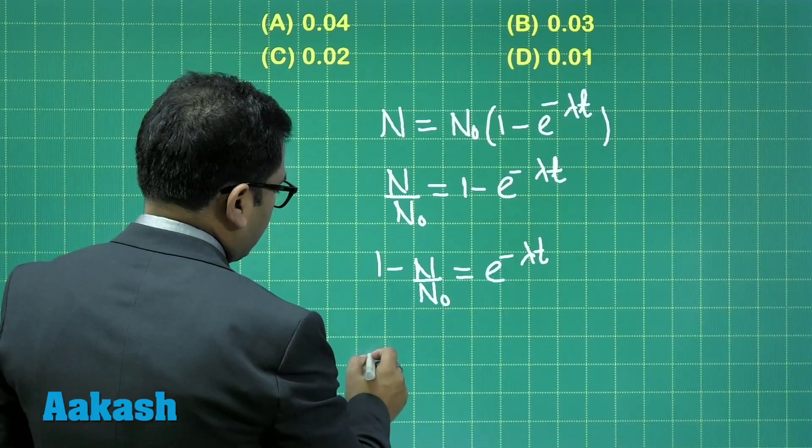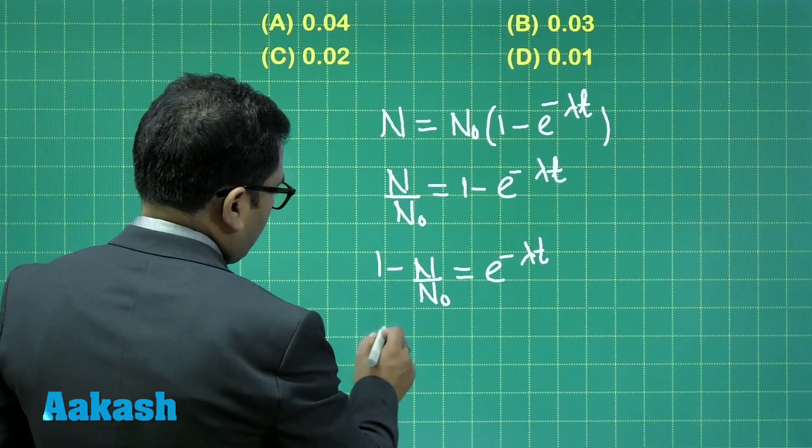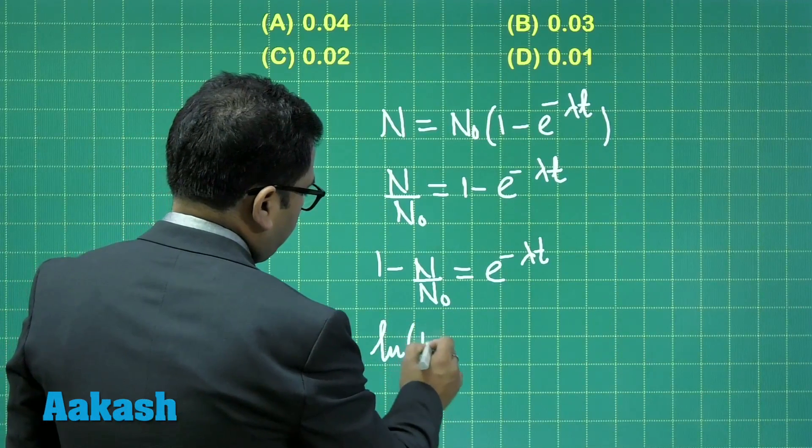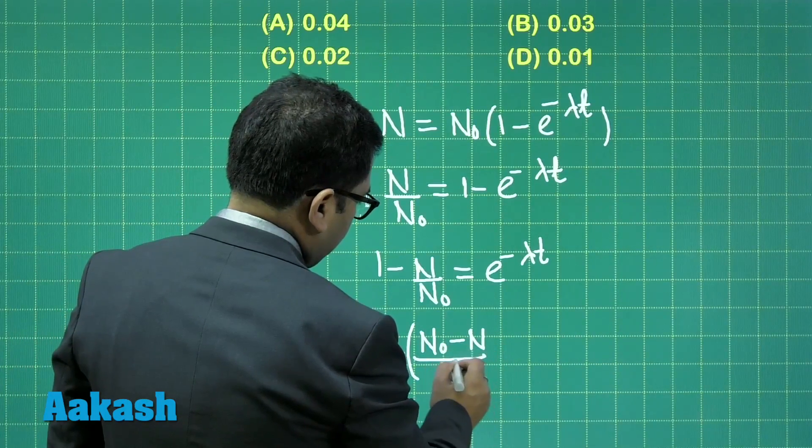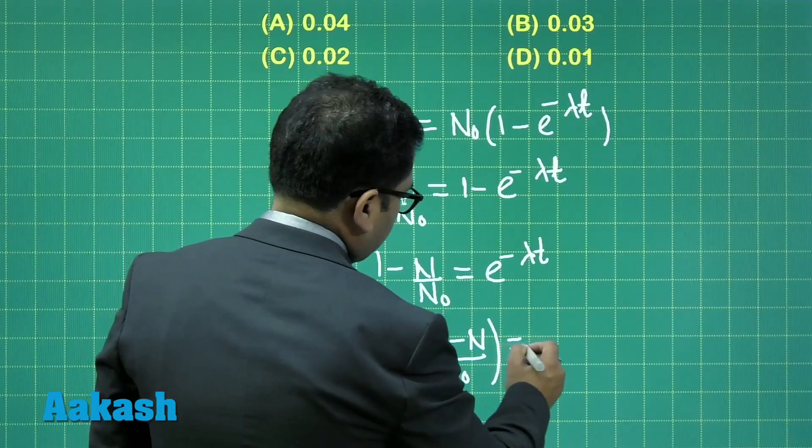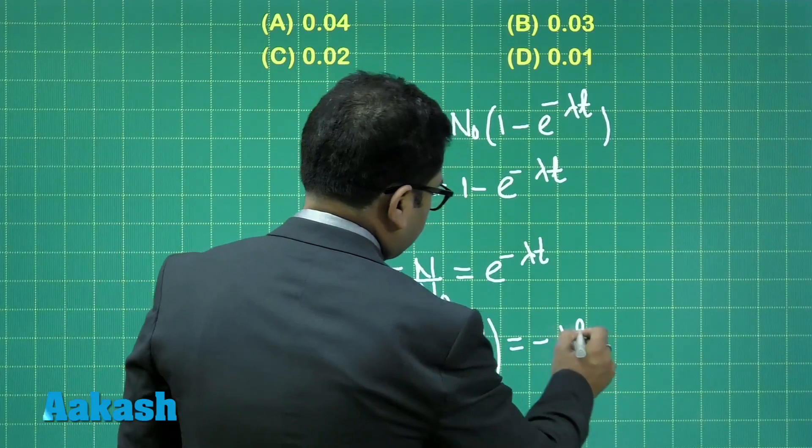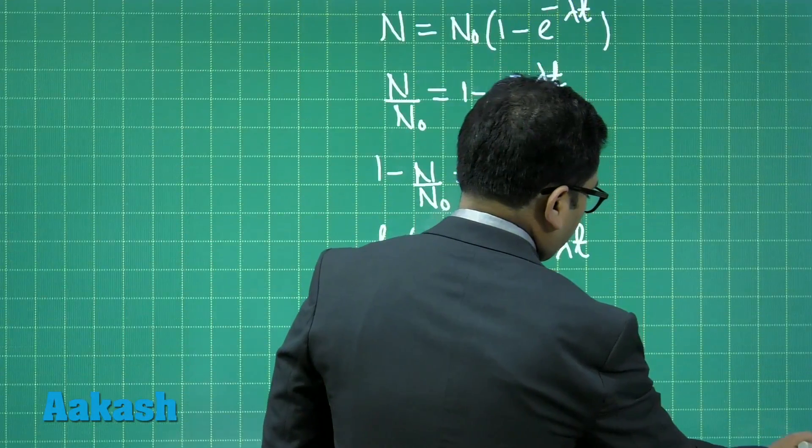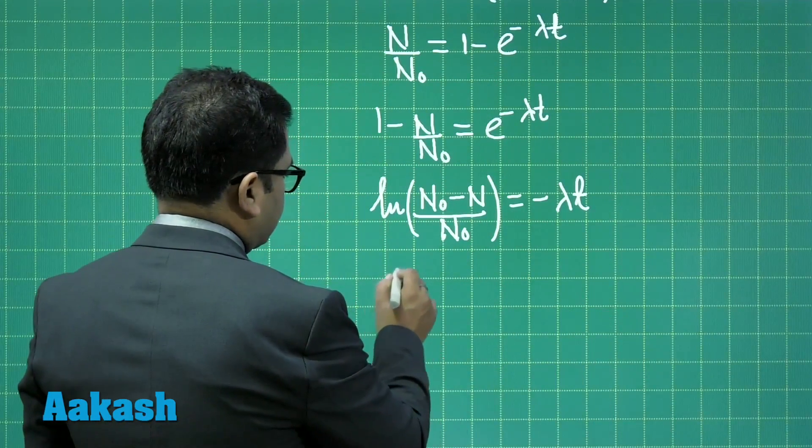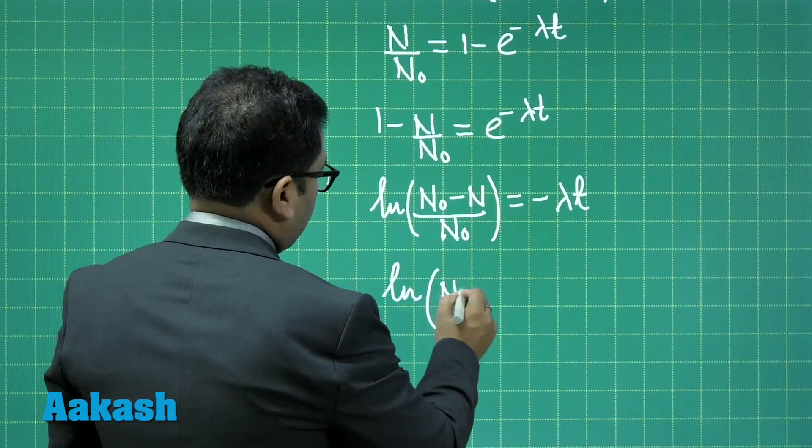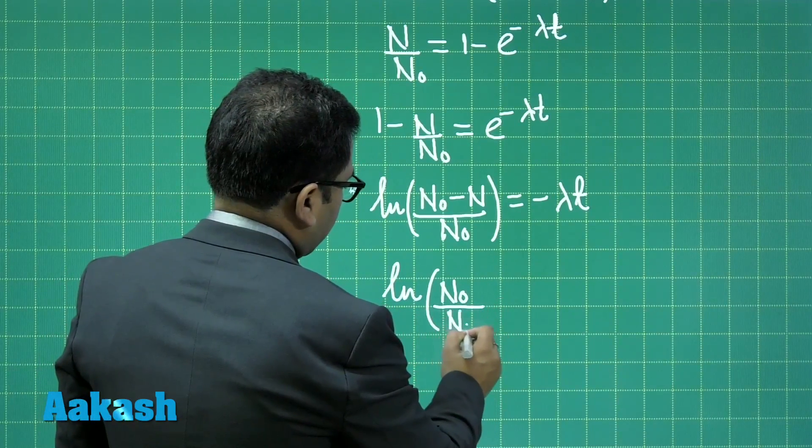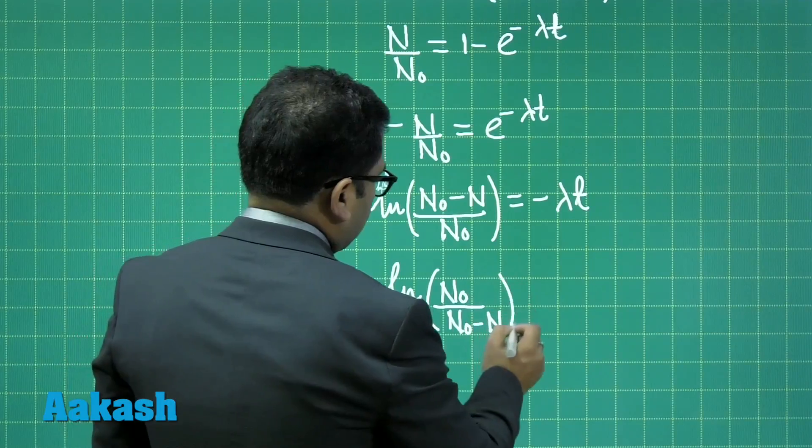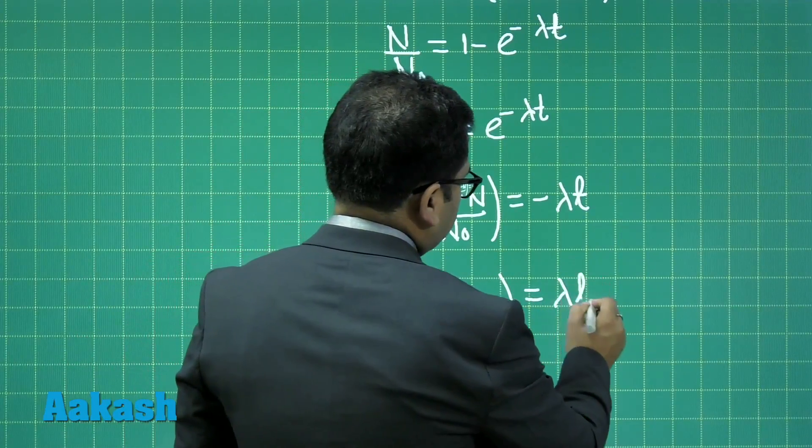And this is going to give me log of N naught minus N by N naught equals to minus lambda times t. And if you use the property of the log slightly, that's log of N naught divided by N naught minus N equals to lambda times t.